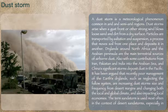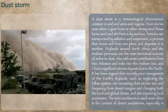A dust storm is a meteorological phenomenon common in arid and semi-arid regions. Dust storms arise when a gust front or other strong wind blows loose sand and dirt from a dry surface. Particles are transported by saltation and suspension, a process that moves soil from one place and deposits it in another.